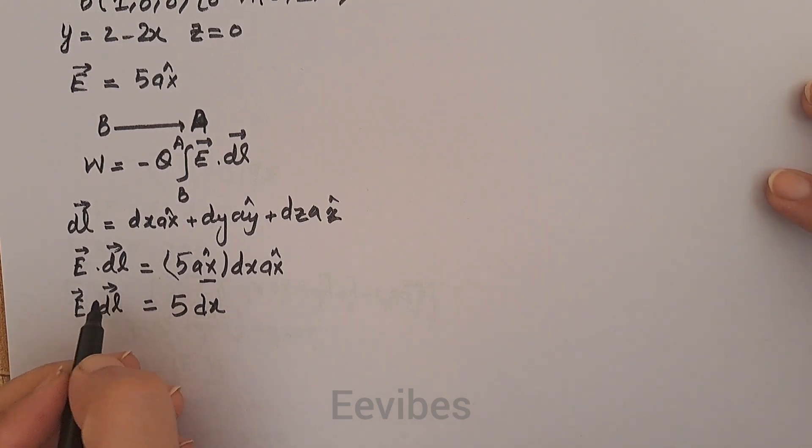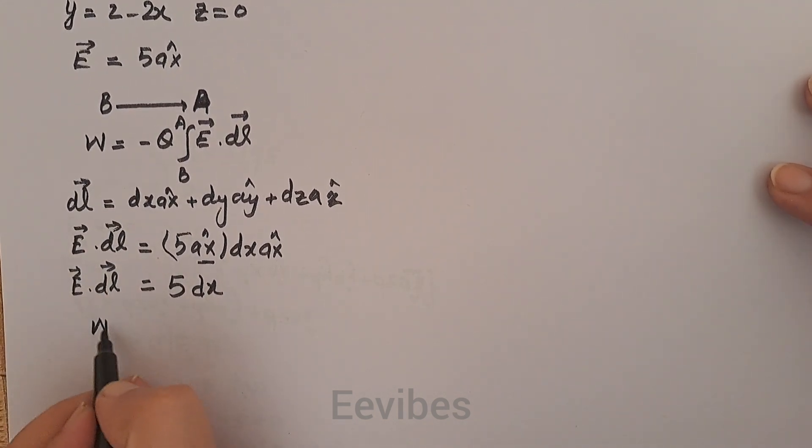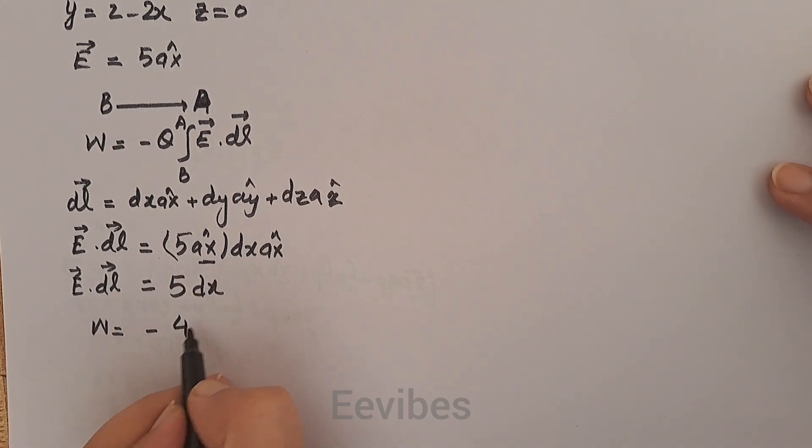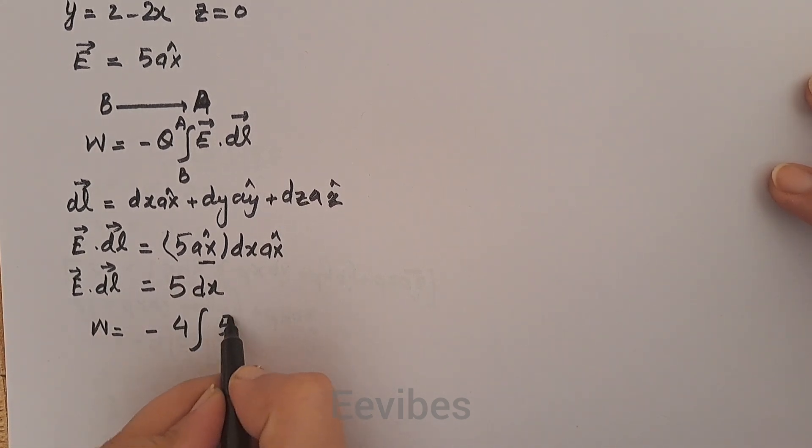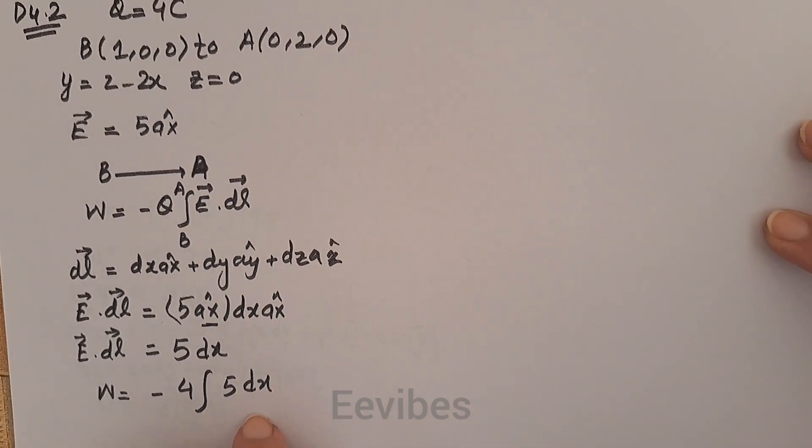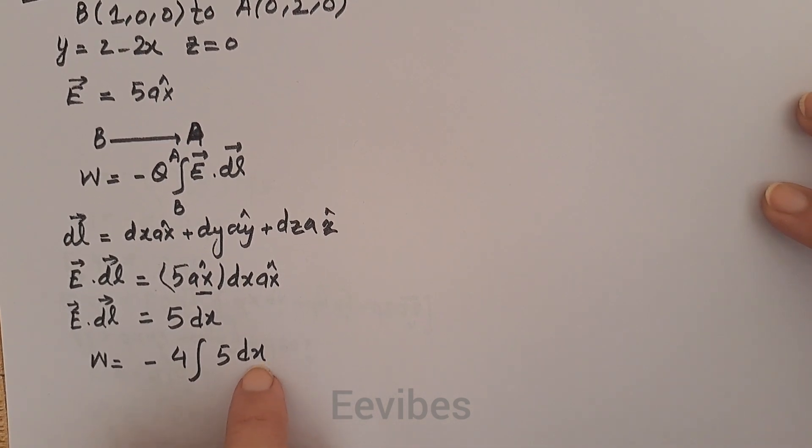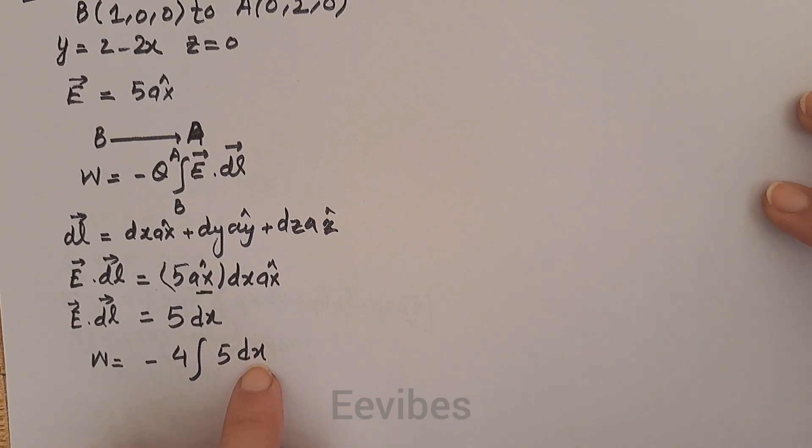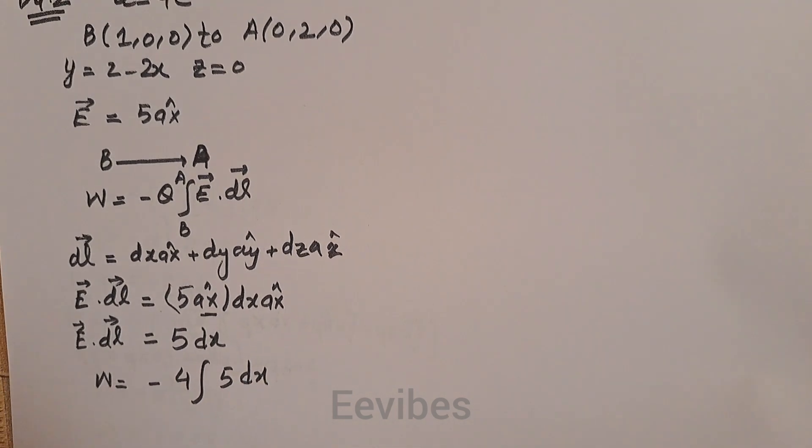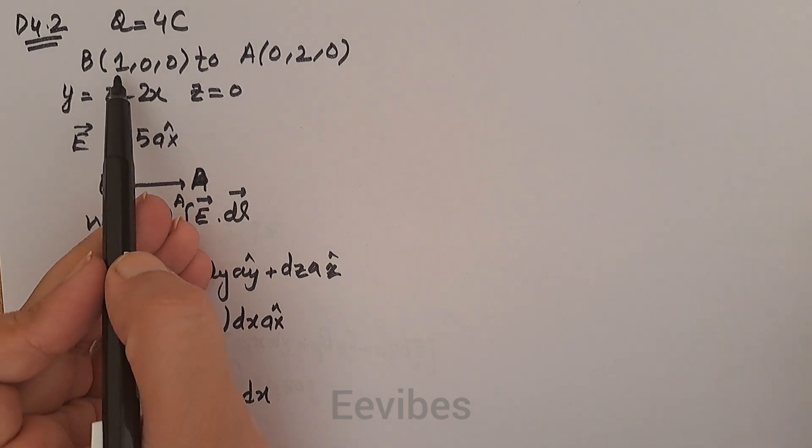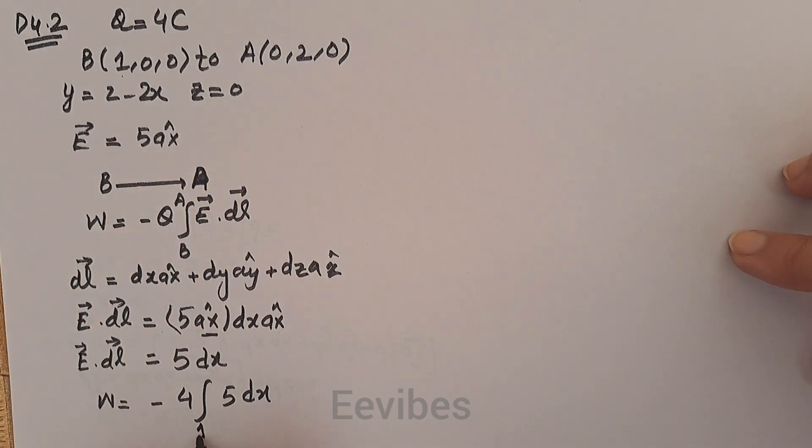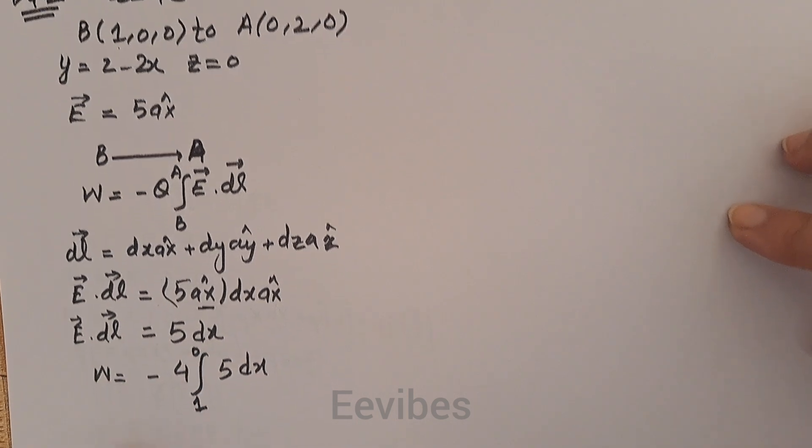Now let's substitute the values. -Q is equal to 4 coulombs in this case, and here you will have 5dx. It can be seen clearly the differential of x is present in the formula, so that's why we will look how x is varying. X is varying from 1 to 0, so let's substitute the limit of x.